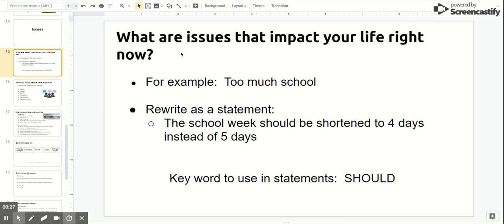So you might say, there's too much school. So that's just an opinion. There's too much school. But now we're going to try to rewrite them as an issue. So instead of saying there's too much school, let's think of an idea. Let's think of something that could be changed. So we're going to rewrite that as a statement. The school week should be shortened to four days instead of five days.